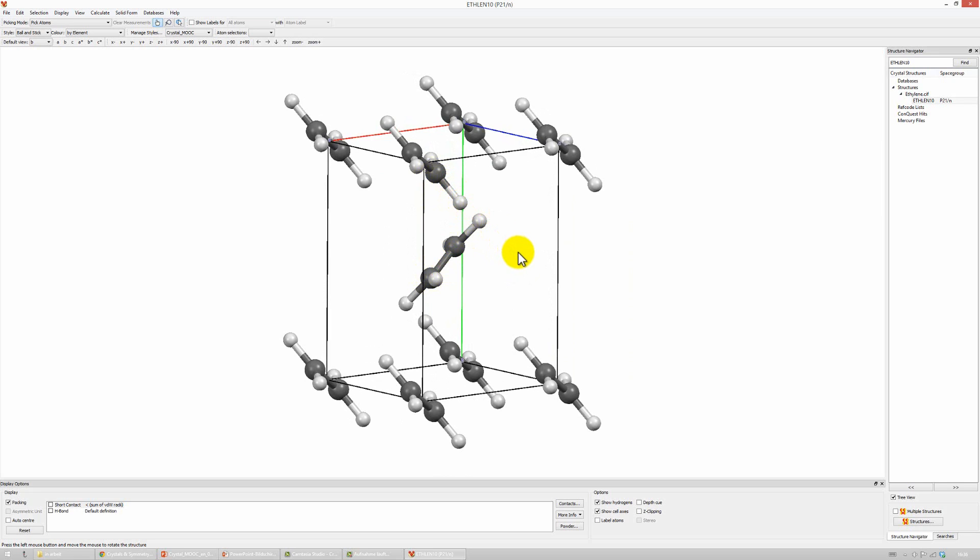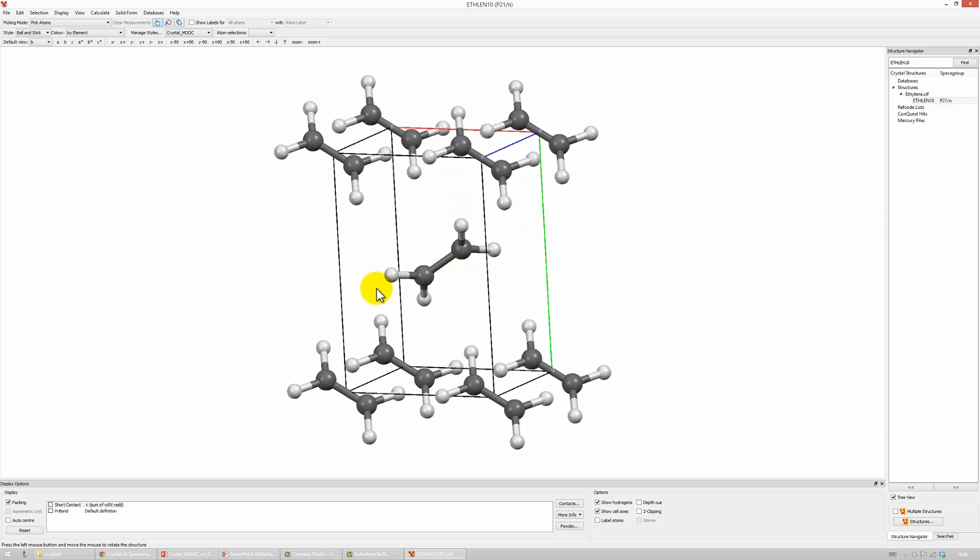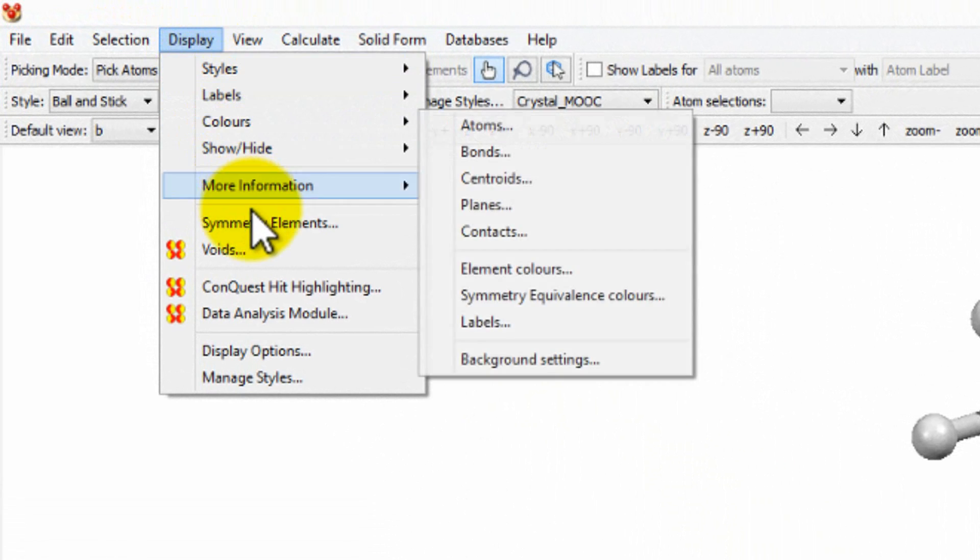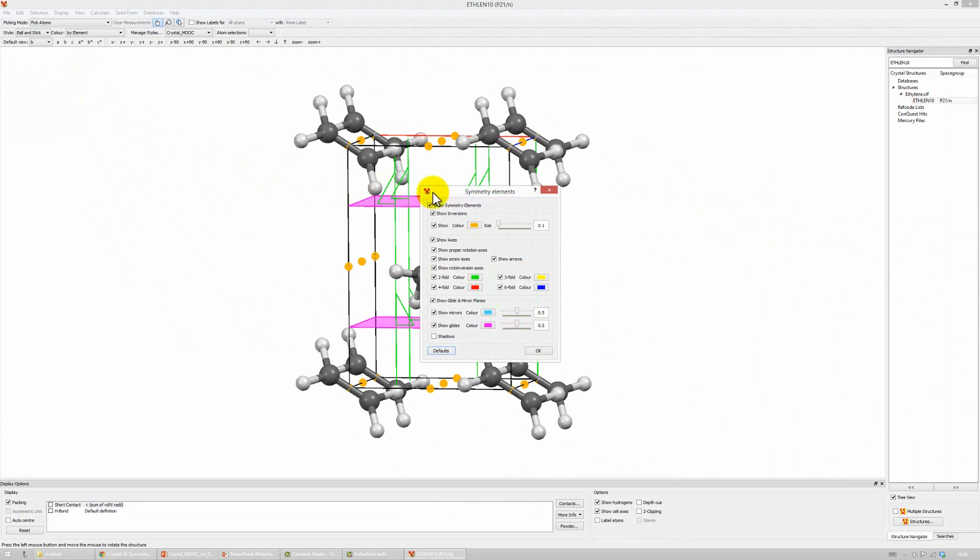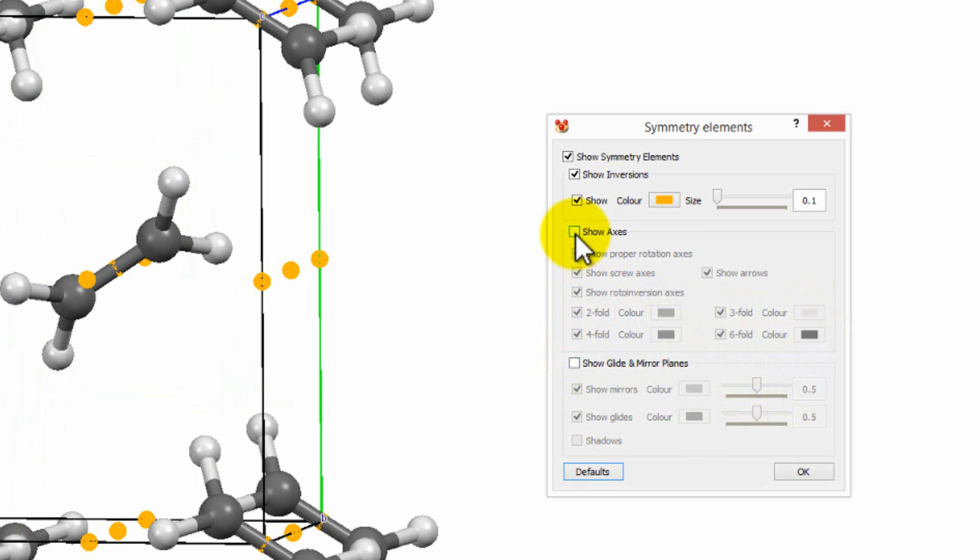One feature of this software, which makes it rather unique, is that Mercury is able to display not only the crystal structure, but also the symmetry elements at the same time. And this is really helpful to deeper understand a crystal structure. So, let's have a look. Go to the menu Display, and then click Symmetry Elements. In this dialog, you can decide which categories of symmetry elements you want to make visible. You can choose different colors and transparencies, and so on. By default, all are selected, but I prefer to explore one category of symmetry elements after the other. So, let's begin with the centers of inversion.